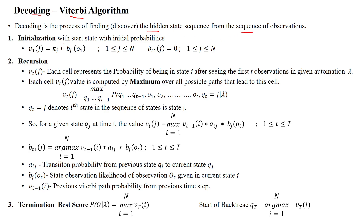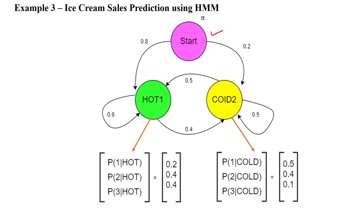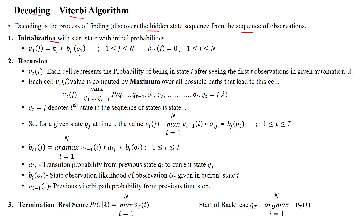The algorithm will be started with an initialization state from the start state. We have to start the initialization from the start state to the next state. This example is ice cream sales prediction based upon the hidden state sequence — whether the day is hot or cold — and what the ice cream sales are, found using the Viterbi algorithm from the observation sequences.